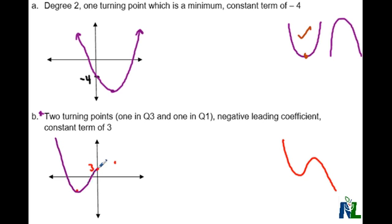I'm going to move up through my 3. Make sure I turn at my second dot. And down again. So there's my two turning points in quadrant 3 and quadrant 1. My negative leading coefficient because this is decreasing. And I've indicated that it passes through 3, so a y-intercept, which gives me the constant term of 3.